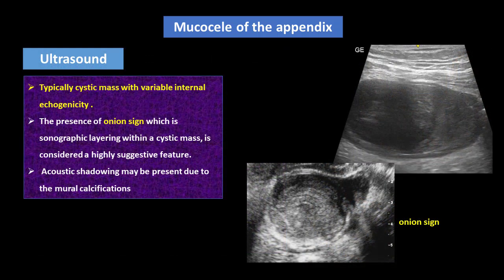On ultrasound imaging, mucocele of the appendix is typically a cystic mass with variable internal echogenicity. The presence of the onion sign, which is sonographic layering within a cystic mass, is considered a highly suggestive feature. Acoustic shadowing may be present due to mural calcifications.